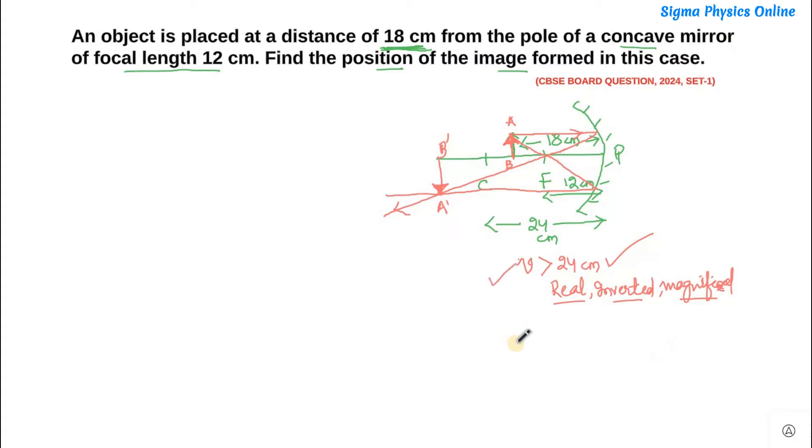Now if we get a value of more than 24 cm for the image distance, that means our answer is probably correct. So now let's solve this. Let's write down what all are given.